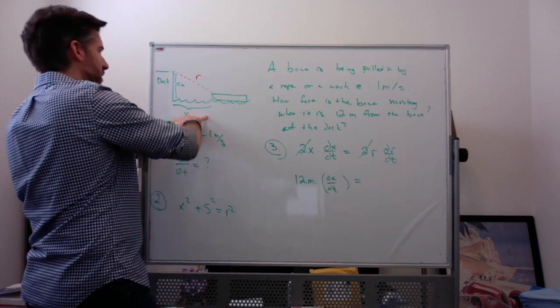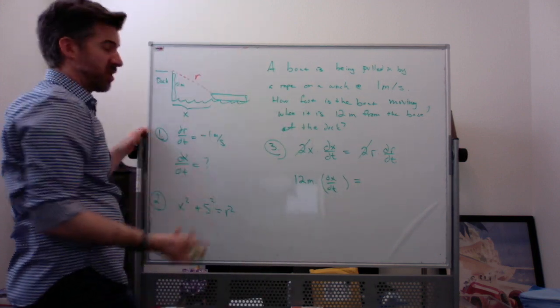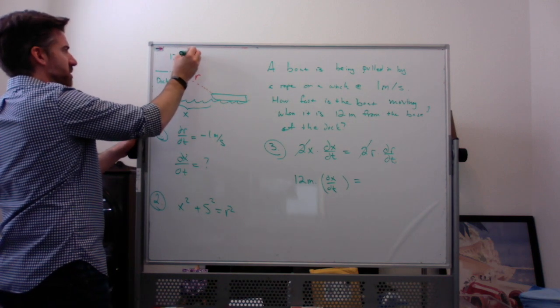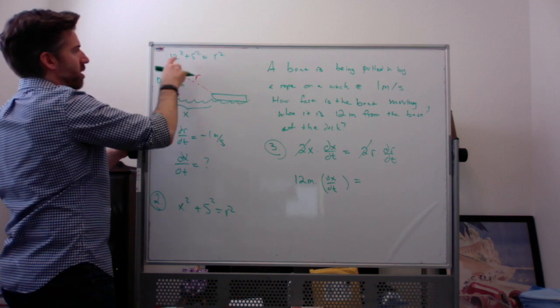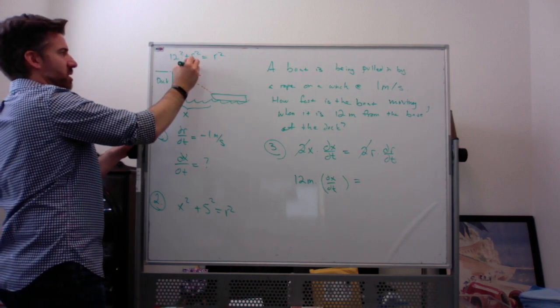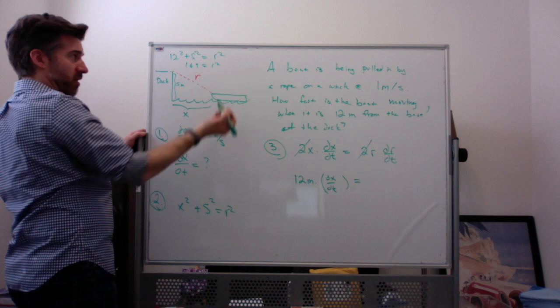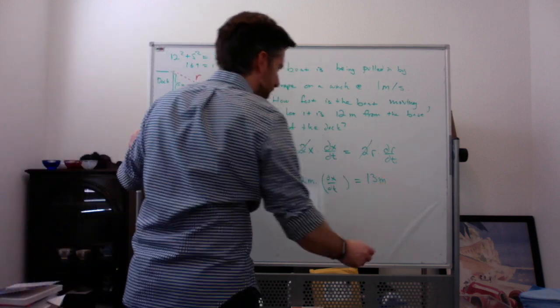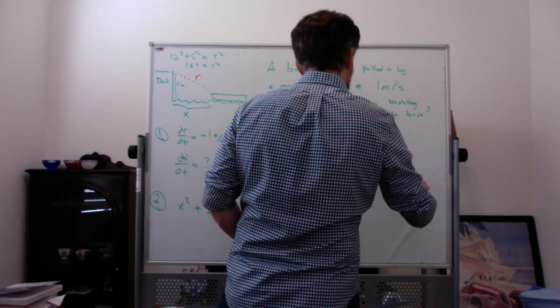So we know that X is 12. We know that this is 5. We know that R is 13 meters. It's a Pythagorean triple. You could also solve, right? 12 squared plus 5 squared equals R squared. 144 plus 25 is 169. And the square root of 169 is 13. So R is 13 meters. And dr/dt, we know it is negative 1 meter per second.